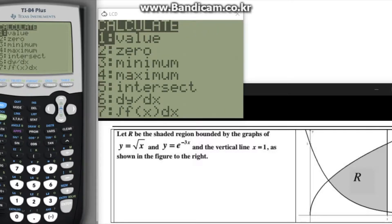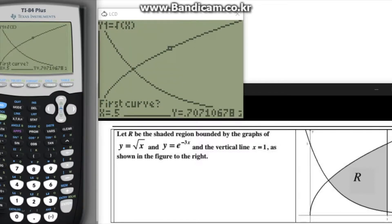To calculate the exact intersection point, press 2nd calc and once the calculate screen pops up, press 5 which says intersect. This will take you back to the graph and show a cursor with the question first curve at the bottom. Using the arrow buttons, move the cursor close to but not exactly on the intersection point of the two equations and press enter.